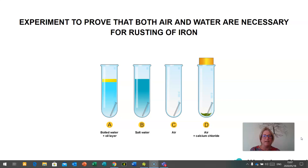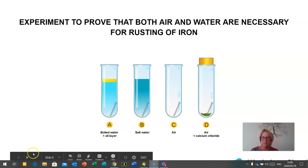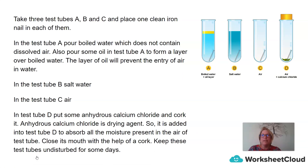Test tube B is salt water. Test tube C is just air. And in test tube D, we have put calcium chloride — an anhydrous substance that is able to remove any moisture from inside the container, reducing the humidity and the amount of water in test tube D. In test tube A, you're going to pour boiled water which does not contain any dissolved air, and also pour some oil to form a layer over the boiled water to prevent the entry of air. In test tube D, we've put anhydrous calcium chloride and a cork. Anhydrous calcium chloride is a drying agent, added to test tube D to absorb all the moisture present in the air of the test tube.